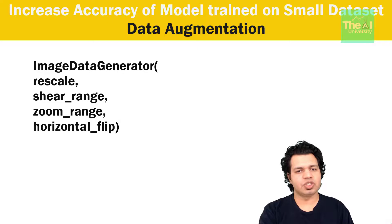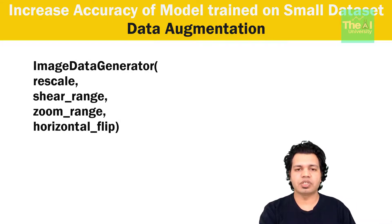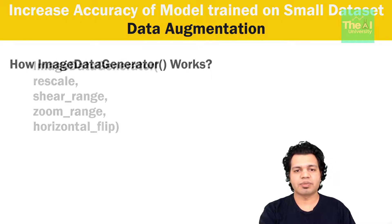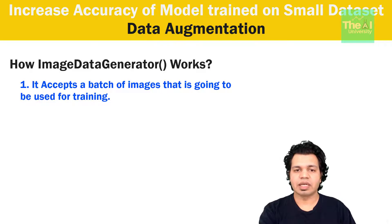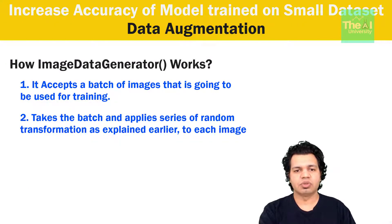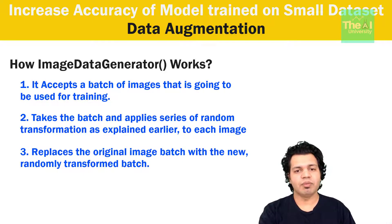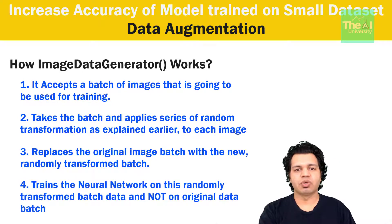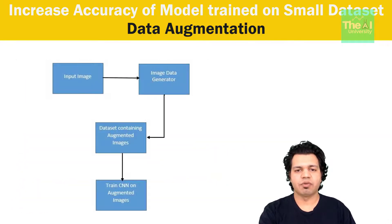For validation or test data we just rescale the image, since it is always good to keep the test dataset as-is and not perform any manipulations on it. Here is how ImageDataGenerator works: first it accepts a batch of images to be used for training; second it applies a series of random transformations passed as parameters to each image in the batch; third it replaces the original image batch with the new randomly transformed batch; and fourth it trains the convolutional neural network on this randomly transformed batch only, not on the original data batch.